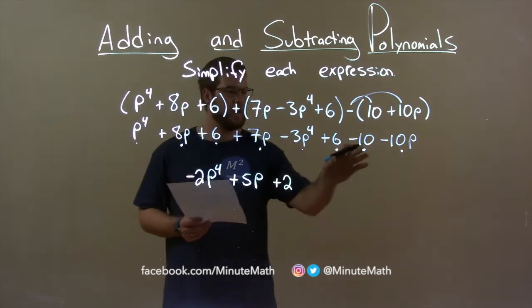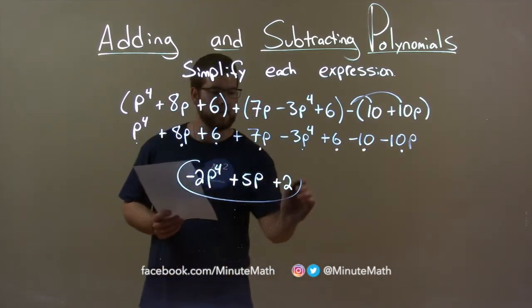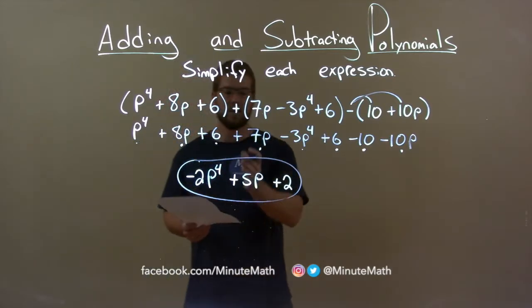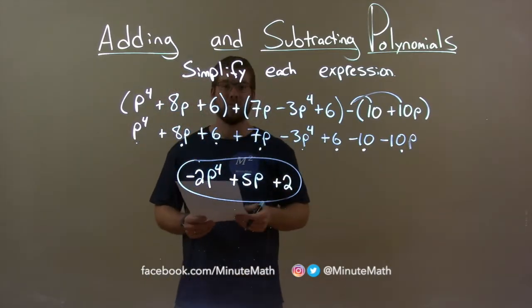Everything came down. Checked our dots. We're good. Our final answer is minus 2p to the 4th plus 5p plus 2.